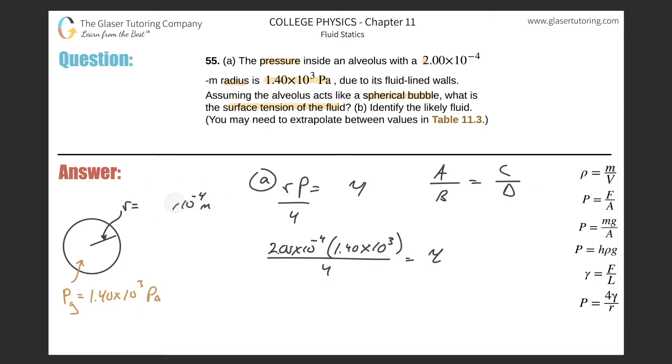We all make mistakes. No big deal. Anyway, calculate. So 2 times 10 to the minus 4 times 1.4 times 10 to the third divided by 4. So we get a gamma value of about 0.07. We can do three sig figs, so that's fine. And here we have newtons per meter. That's the surface tension. Those are the units. And that's equal to our gamma value.